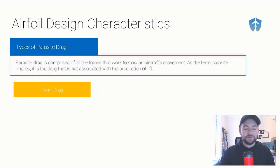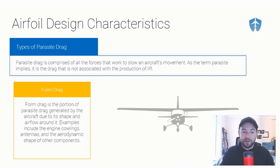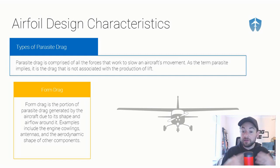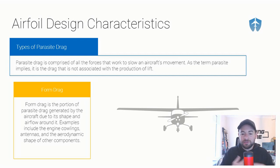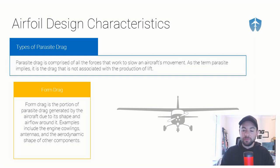Let's talk about the types of parasite drag. There are three subcategories. The first one is form drag. Form drag is the portion of parasite drag generated by the aircraft due to its shape and the airflow around it — just the shape of the airplane flying through the air. This includes things like the engine cowling, antennas sticking off the airplane, the landing gear, and the aerodynamic shapes of other components. The form of the airplane — its shape — is creating drag.